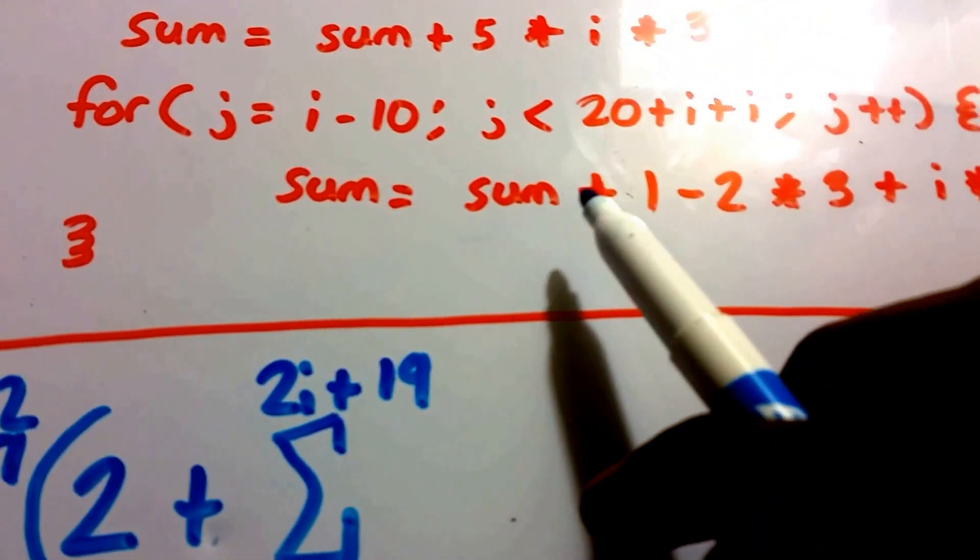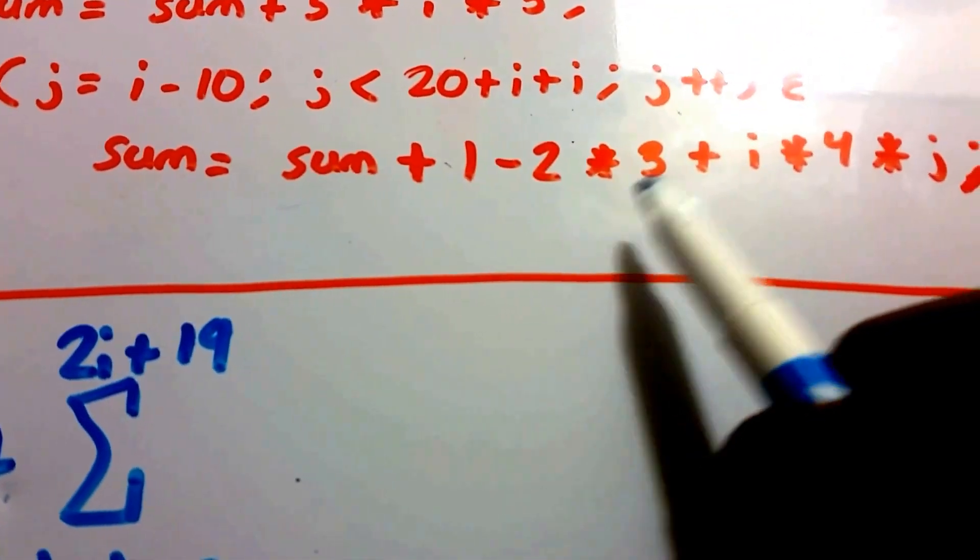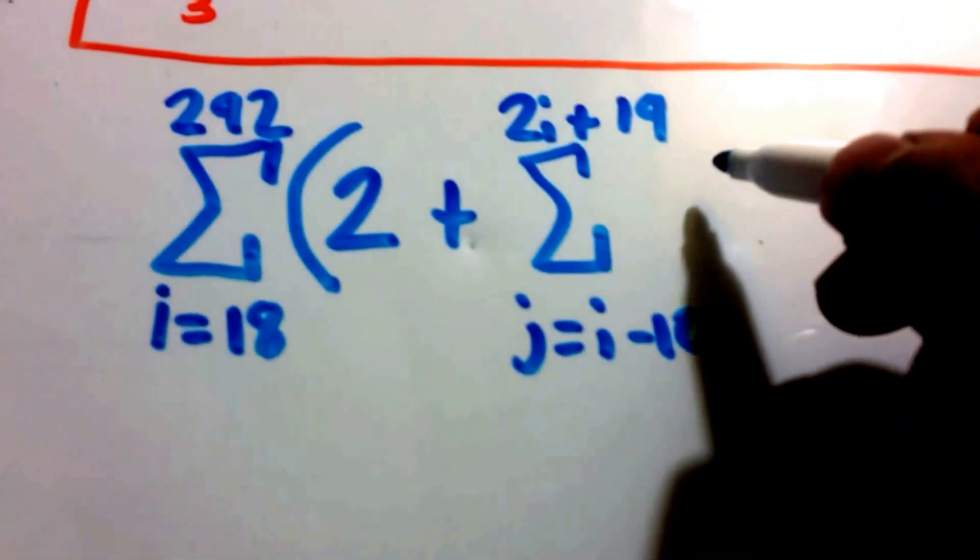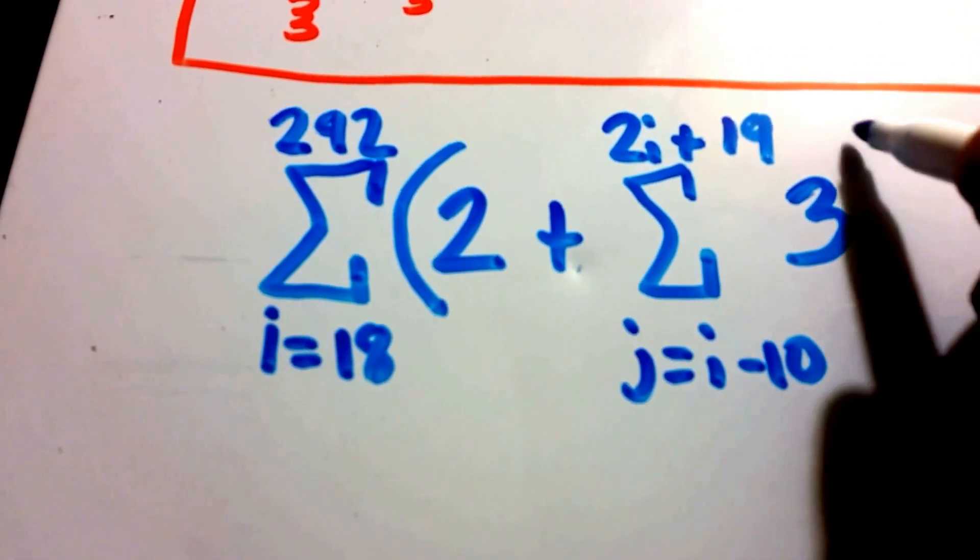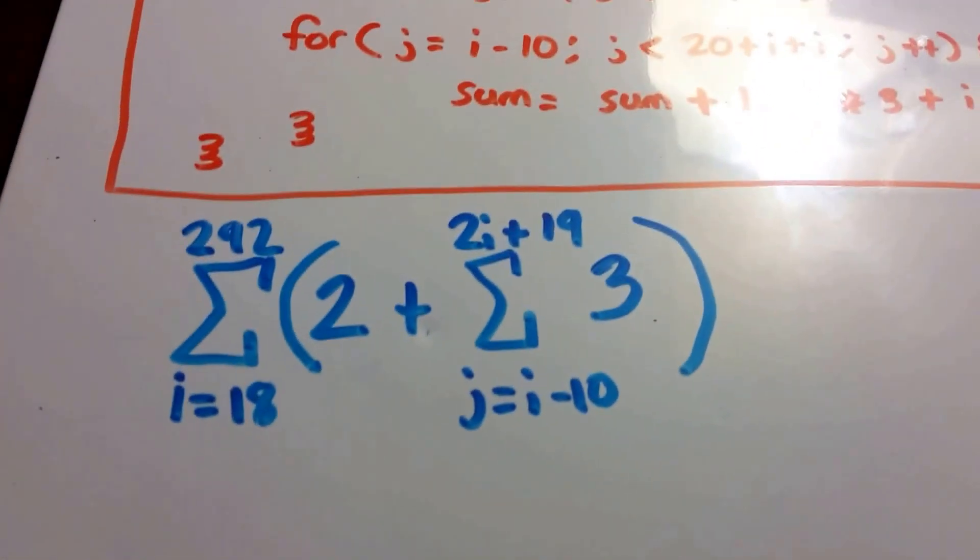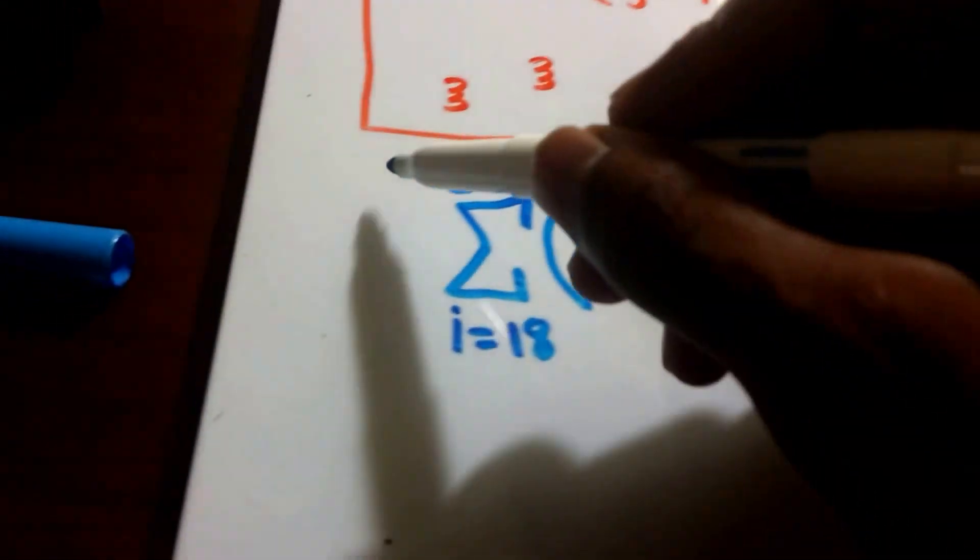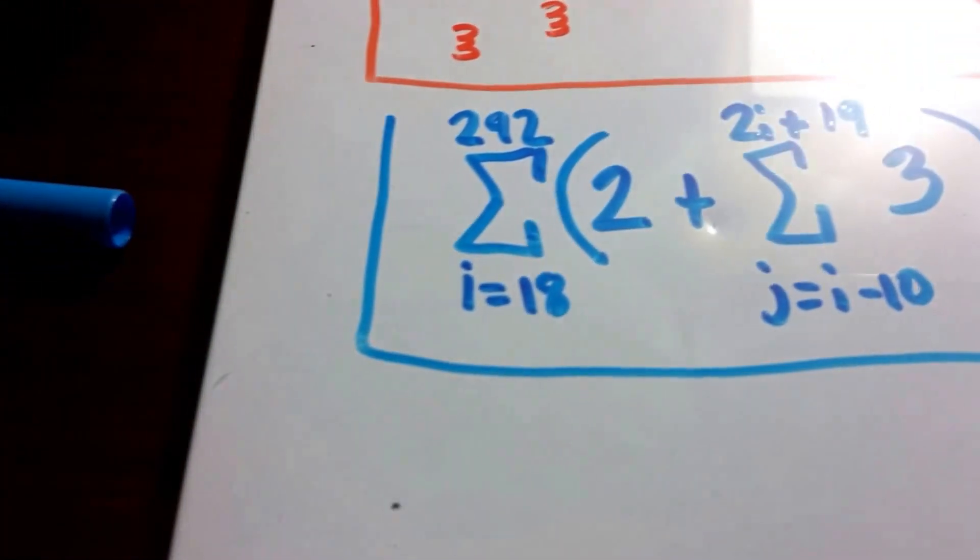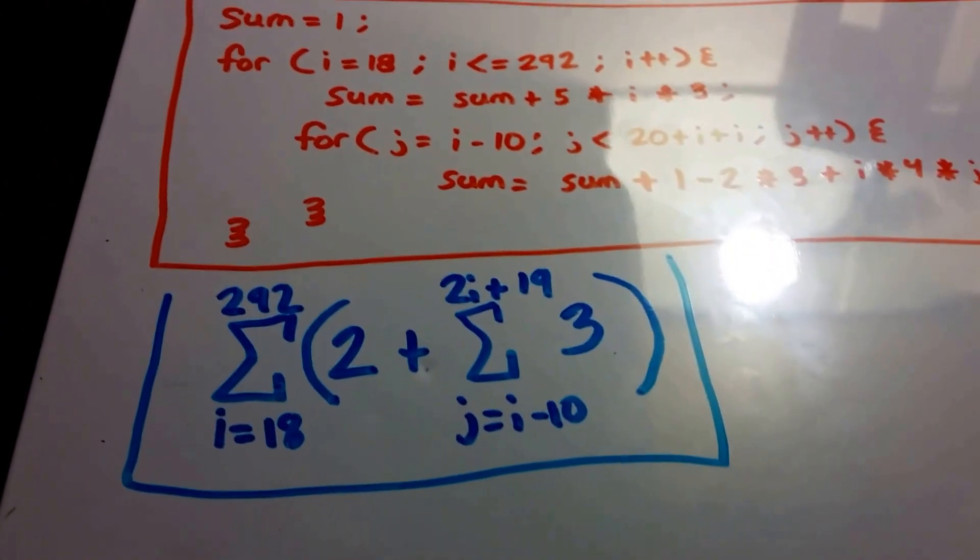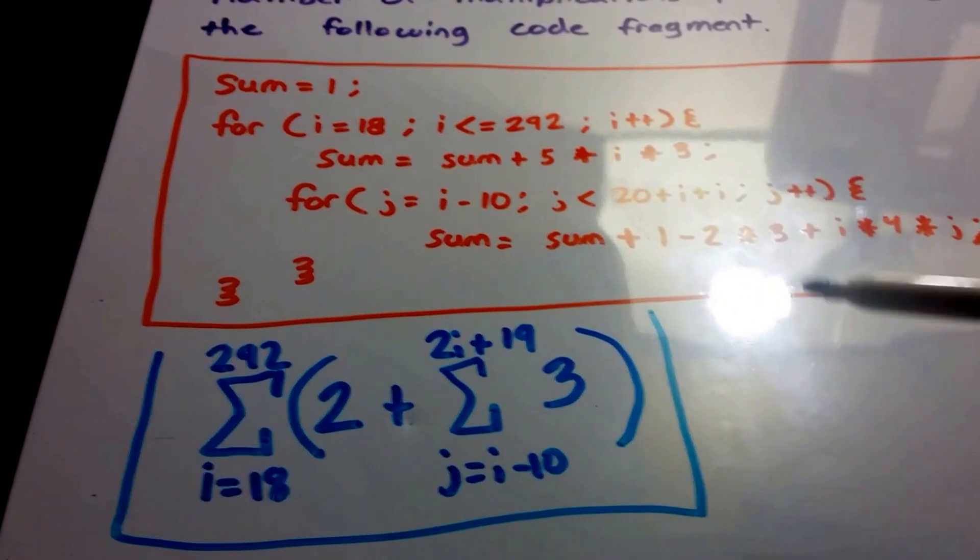And then within this loop, we can see we have 1, 2, 3 multiplication operations. So we're going to put a 3 here. And that's it. So this is our answer. This is a summation that describes the number of multiplications performed by this code fragment.